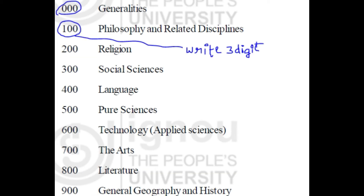In actual practice, you should write it as 000 for Generalities, 100 for Philosophy and Related Disciplines, 200 for Religion, and so on. You have to use three digits — don't write it as a single digit like 0 for Generalities.